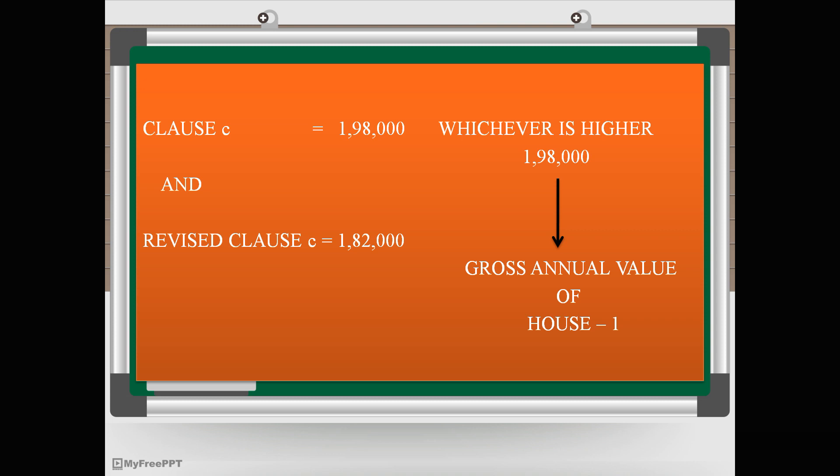Revised Close C = Close A minus loss of vacancy period = 2,00,000 minus 18,000 = 1,82,000. Now compare original Close C (1,98,000) and revised Close C (1,82,000). We pick the higher amount: 1,98,000. That is our Gross Annual Value of house number 1.